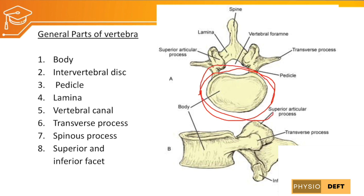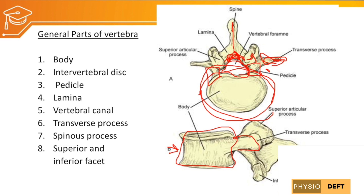The body of the vertebra is the anterior part. The pedicle starts posterior to the vertebral body bilaterally and continues as the lamina. The laminae join to form the spinous process posteriorly. We also have superior and inferior articulating facets and the transverse processes. Between the body and the anterior arch of the lamina is the vertebral canal. From the lateral view, anteriorly there is the vertebral body, then the transverse process, followed by the superior and inferior articulating facets. The lamina is the continuation of the pedicle, and posteriorly we have the spinous process.